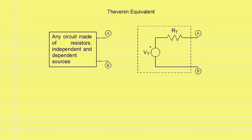In this video, we will give the Thevenin equivalent of a circuit. The circuit on the right is the Thevenin equivalent of the circuit on the left. The circuit on the left is enclosed inside a box. It is made up of any number of resistors, independent and dependent sources, and it has two terminals A and B coming out of the box. We are interested in finding the equivalent of this circuit between the terminals A and B.